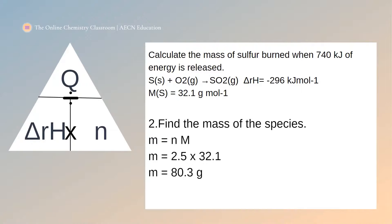So in your exam, you will be asked to find either Q, delta Rh, or n — energy change, enthalpy of reaction, or number of moles. Most likely you're going to be asked to calculate energy change or enthalpy of reaction, as that's what usually tends to come up. But make sure you do know how to calculate all three and how to use this triangle.